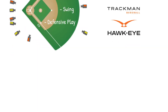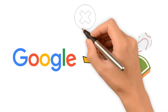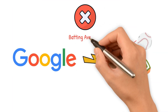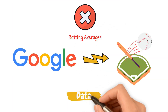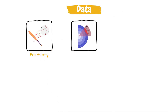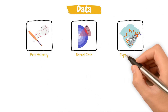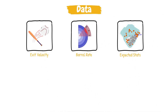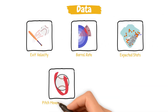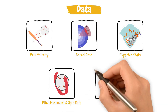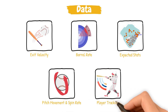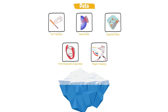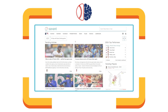Think of it as Google for baseball stats, but instead of batting averages, it gives you data like exit velocity, barrel rate, expected stats, pitch movement and spin rate, player tracking, and that's all just the tip of the iceberg. Let's dive into how to navigate this site.